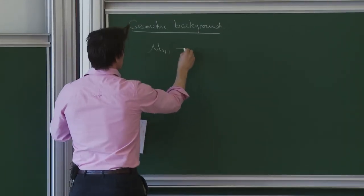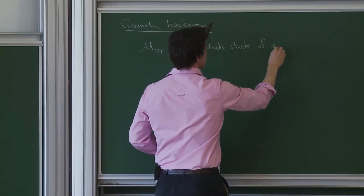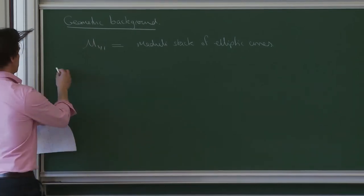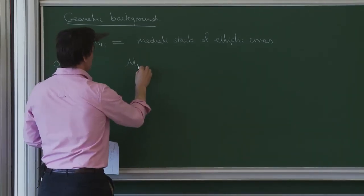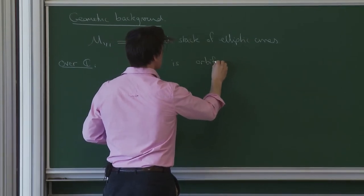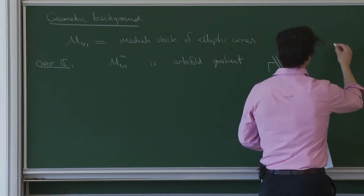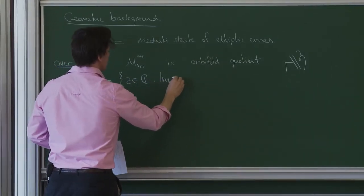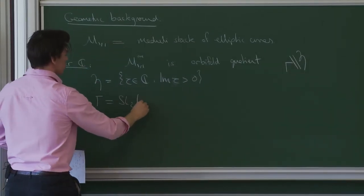The main space we're going to work on is M11, the moduli stack of elliptic curves. There'll be two different main ways of thinking about this. The first is over the complex numbers. Over C, we will think of M11 simply as the orbifold quotient of the upper half plane by gamma. H is the upper half plane and gamma throughout this lecture will be SL2Z and nothing else.